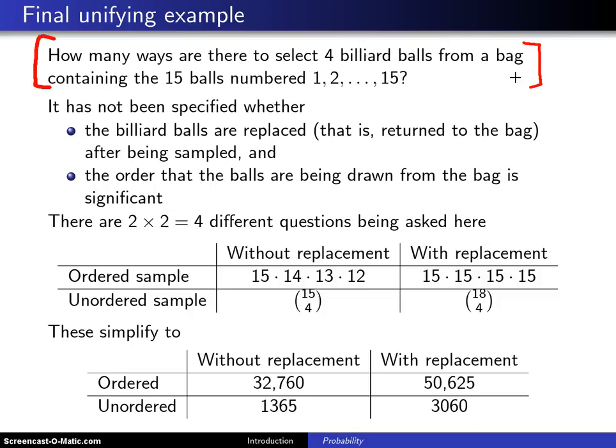That question in and of itself is very poorly worded and vague because it turns out there are four problems embedded into that. It was not specified whether the billiard balls are being sampled with replacement or without replacement. Did they get returned to the bag after you pulled one out? The other thing that's vague is does the order of the balls that are being sampled from the bag matter? Is that significant? So really what we have here is four different questions being asked in this rather vague notion.